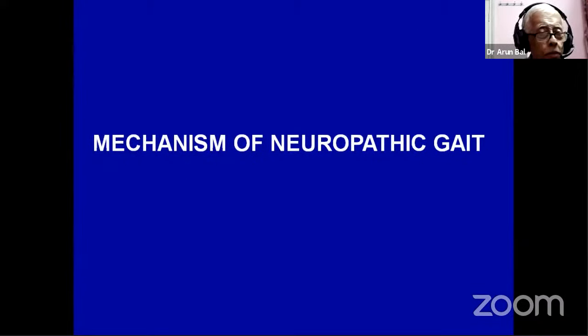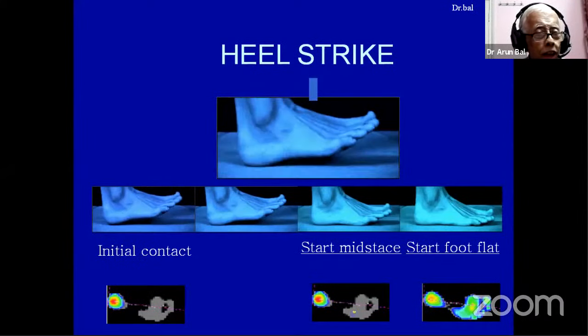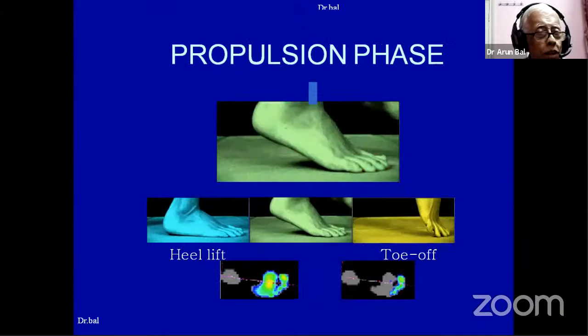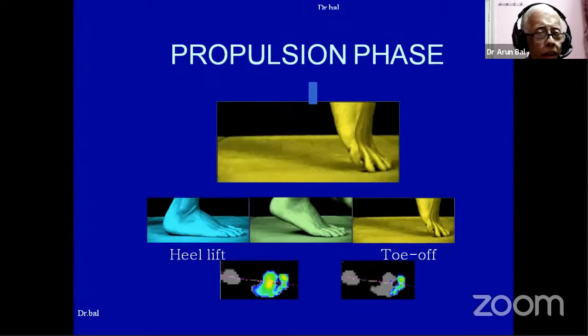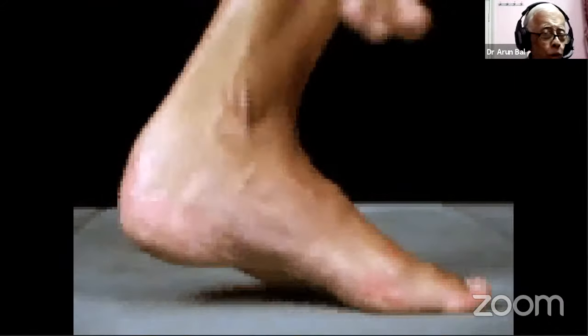What is the mechanism of neuropathic gait? The walking cycle consists of heel strike, which goes into mid-stance and then into propulsion — everybody walks like that. The human foot has 26 bones and 29 joints. Why don't these bones rattle when we run, jump, or play? Because of a structure called the plantar fascia and other ligaments, which hold the foot rigidly together.